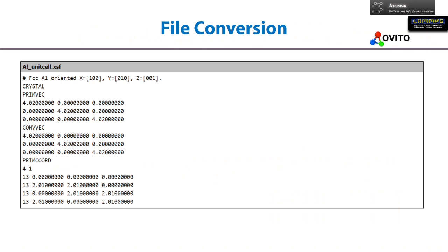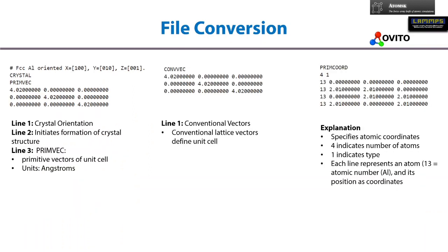What is the initial data type? Here is an example of aluminum unit cell dot XSF. This is a randomly generated aluminum structure. If I go into the depth of this structure, we divide it into three parts. In the first part it is written FCC aluminum oriented, which means the structure is FCC, it consists of aluminum atoms, and the orientation along X, Y, and Z axes are shown.